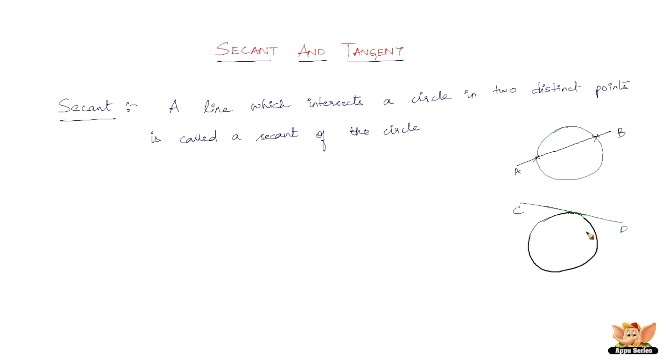Now this line is definitely not a secant because a secant is a line which intersects a circle in two distinct points. But this line is intersecting this given circle at just one point. That is this one. This is the only one point. So what is that kind of line called? That line is called as a tangent.